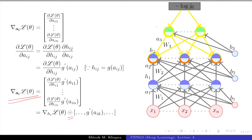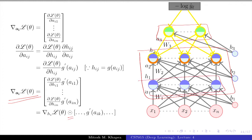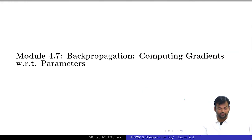In that process, we started from the output layer, treating it a bit specially because the output function is special and it is the last layer. We first computed the gradient with respect to the output layers, then figured out how to compute the gradients with respect to any of the hidden layers. Now the next thing we need to do is: having computed the gradients with respect to any of these hidden layers, we want to find the gradients with respect to the parameters — the weights and the biases. We are now at the last point: computing gradients with respect to parameters.